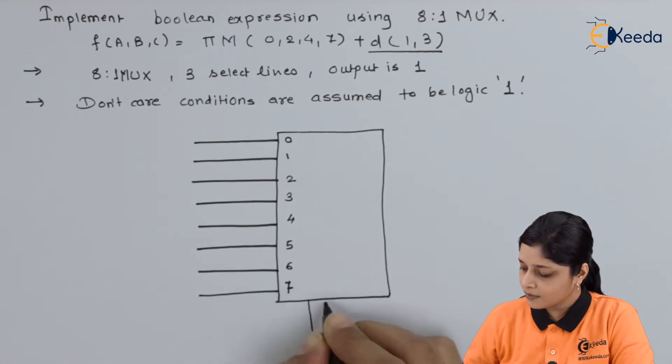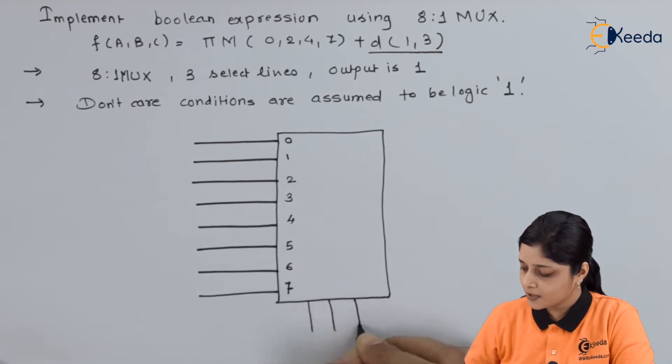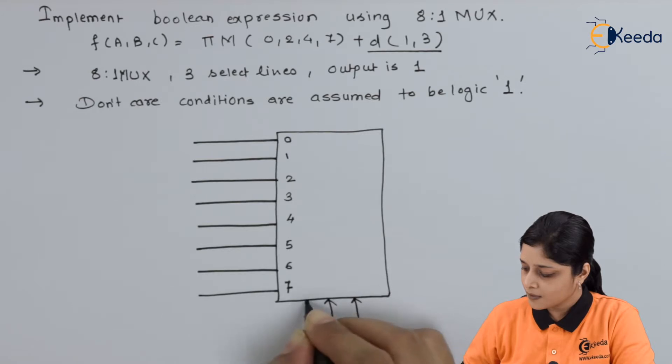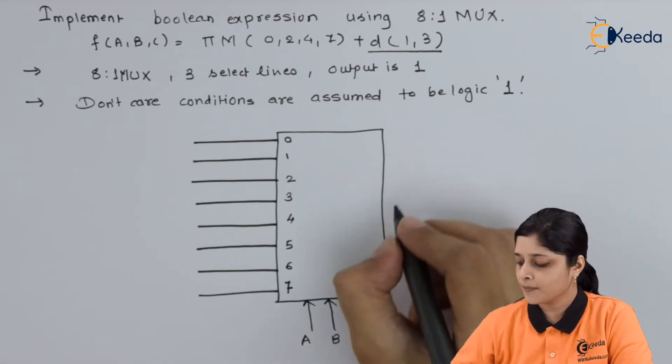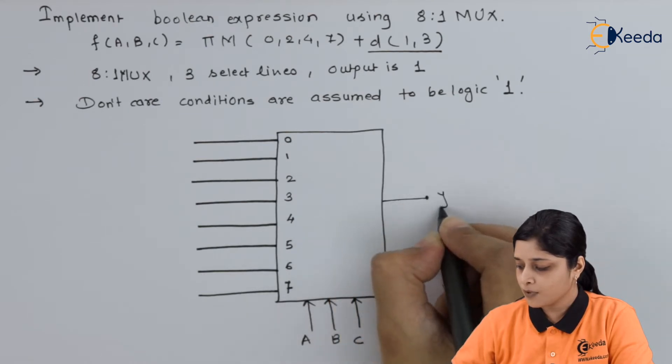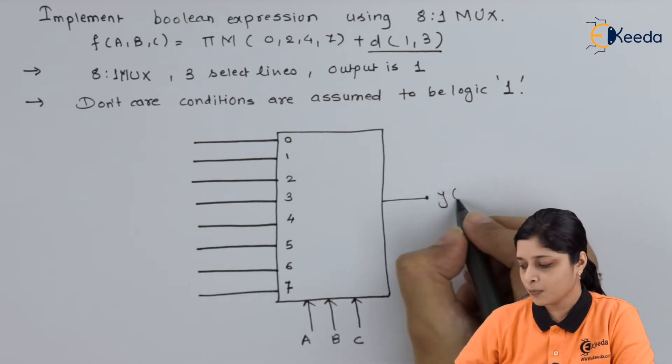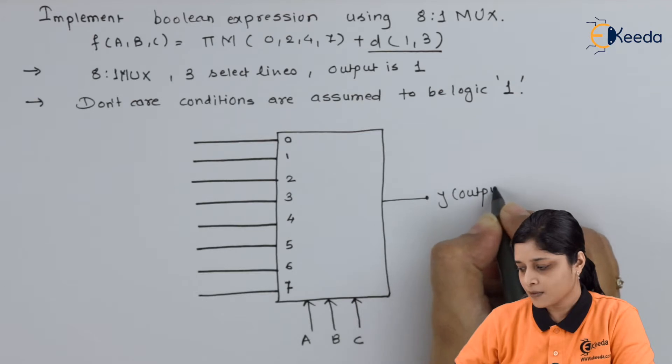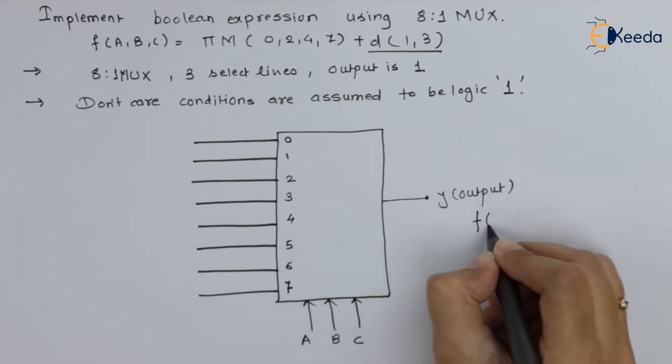Now here three select lines are present, that is A, B and C, and here output Y only one output is present, and which is nothing but f of A, B and C.